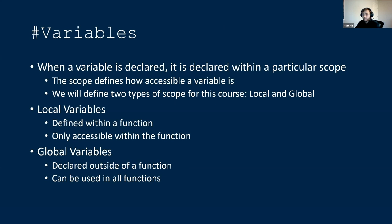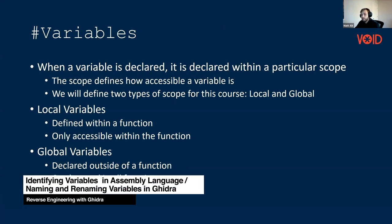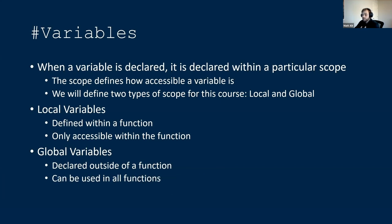We've talked about loops and variables, but we haven't covered variable representation in assembly language yet. When a variable is declared, it's declared within a particular scope. For our purposes, we'll talk about two big categories: local and global. Local variables are defined within a function and typically only accessible within that function. Global variables are declared outside of a function and can be used across your entire program. These are both represented differently in assembly language.